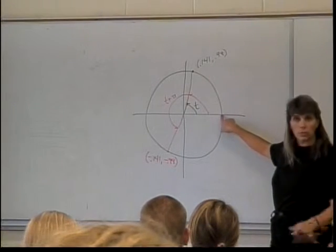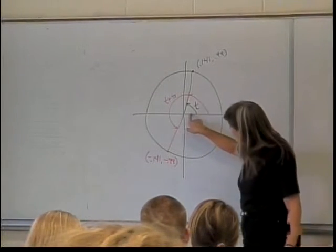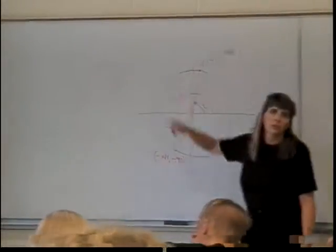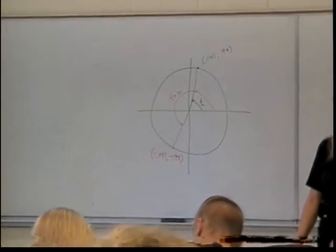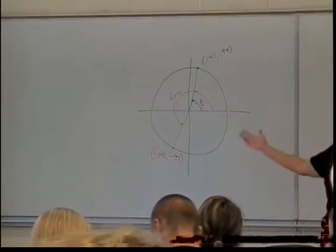So I know this is one, because it's a unit circle. So I figured 0.141 was about here, and 0.99 was about there. So it's a guess. It doesn't need to be perfect, it just needs to be close enough.